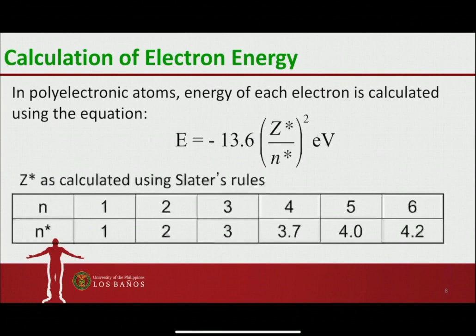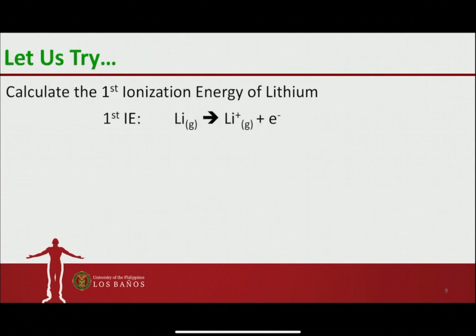From n = 1 to n = 3, n* is simply the same value as n. But as we go to larger values of n, the n* value is considerably lower: for n = 4, n* = 3.7; for n = 5, n* = 4.0; and for n = 6, n* = 4.2. With that, let us try this next problem: calculate the first ionization energy of lithium.